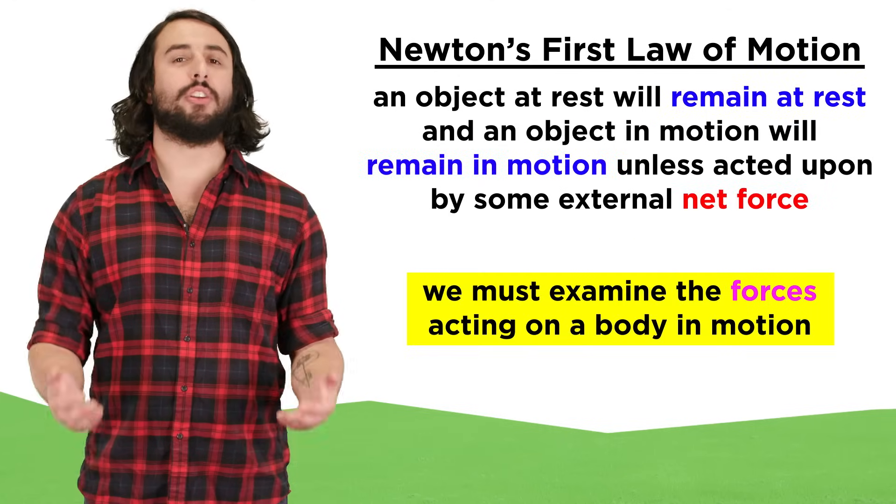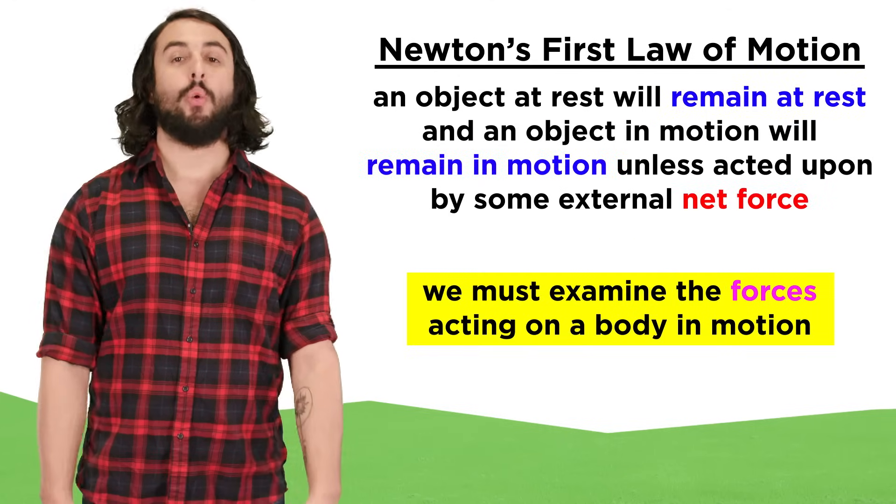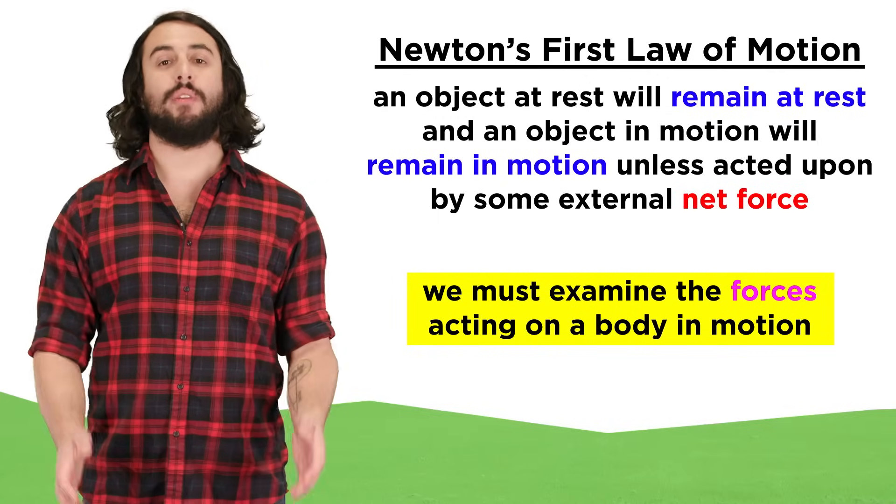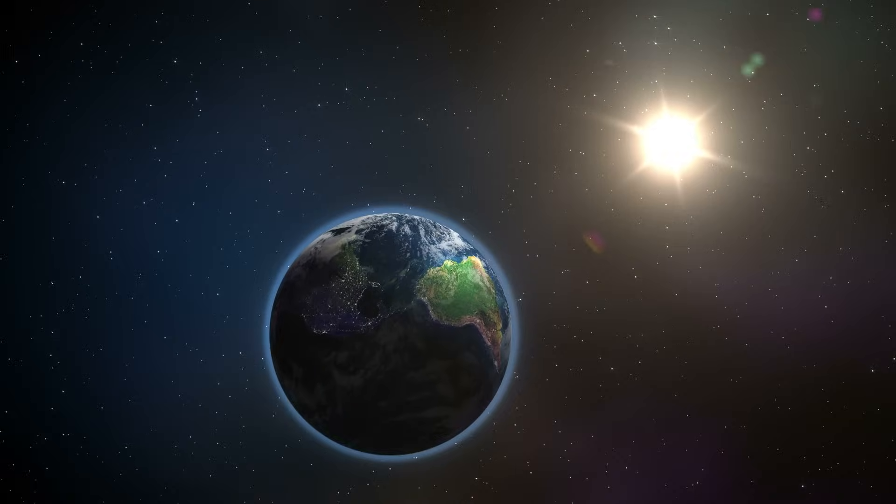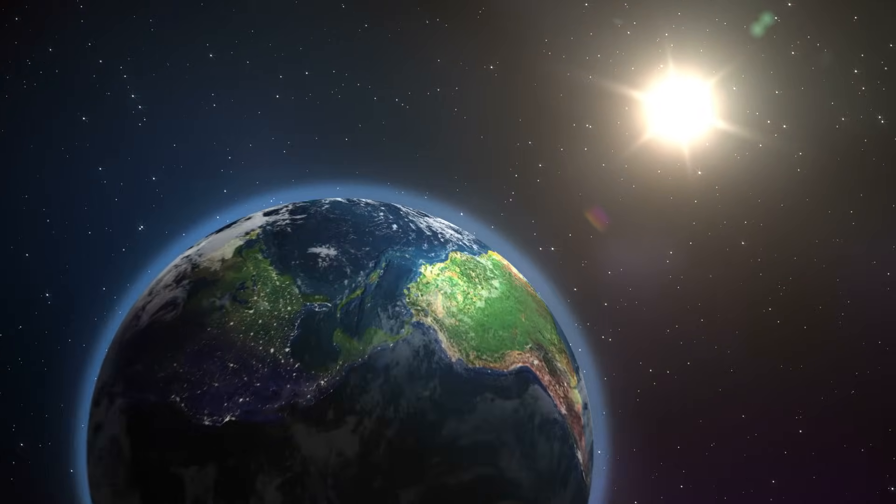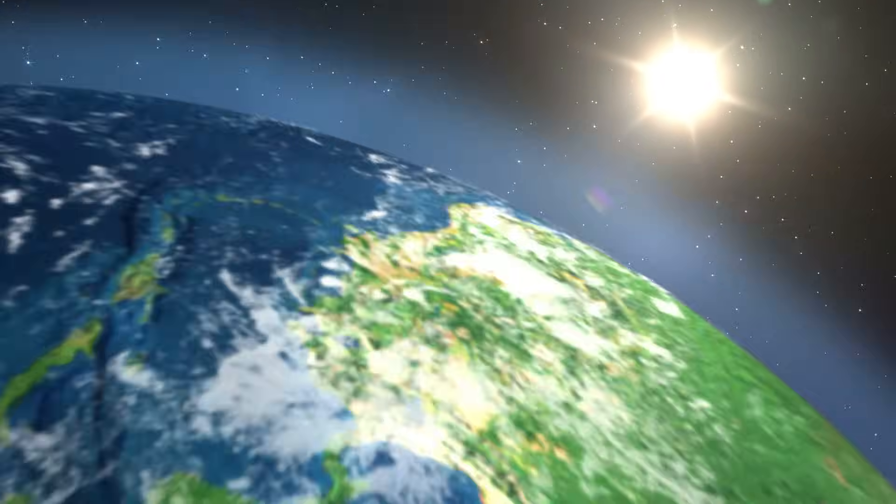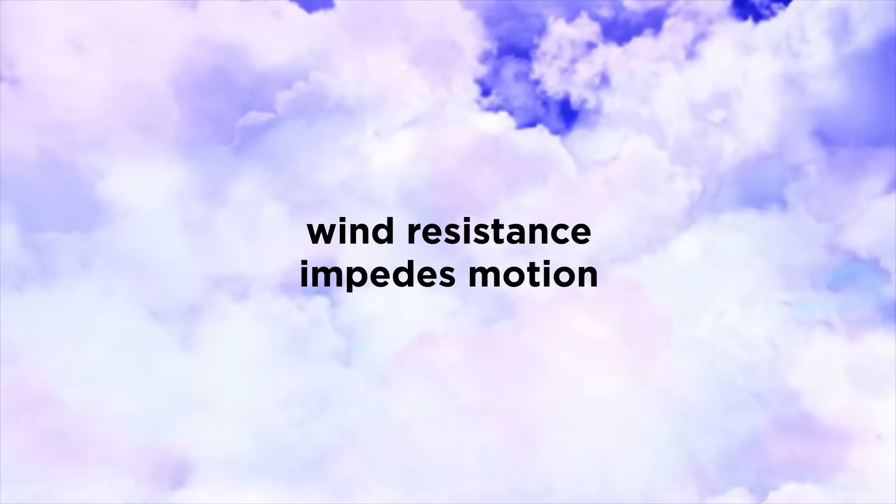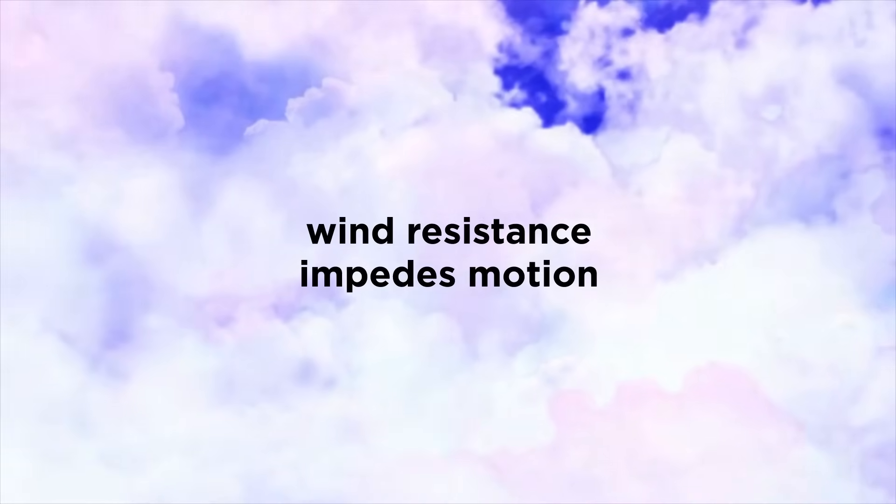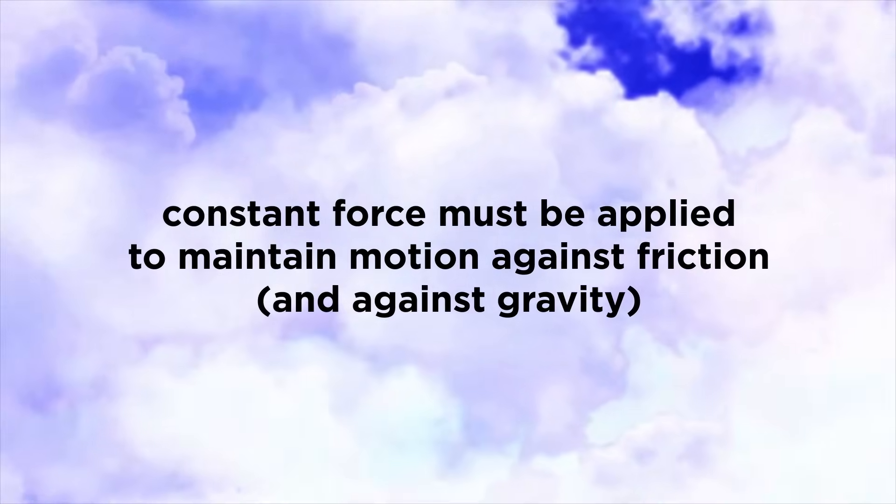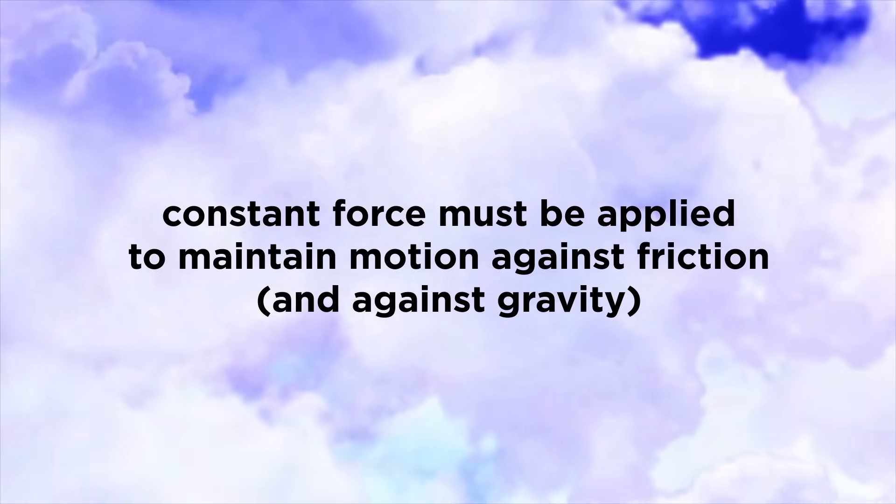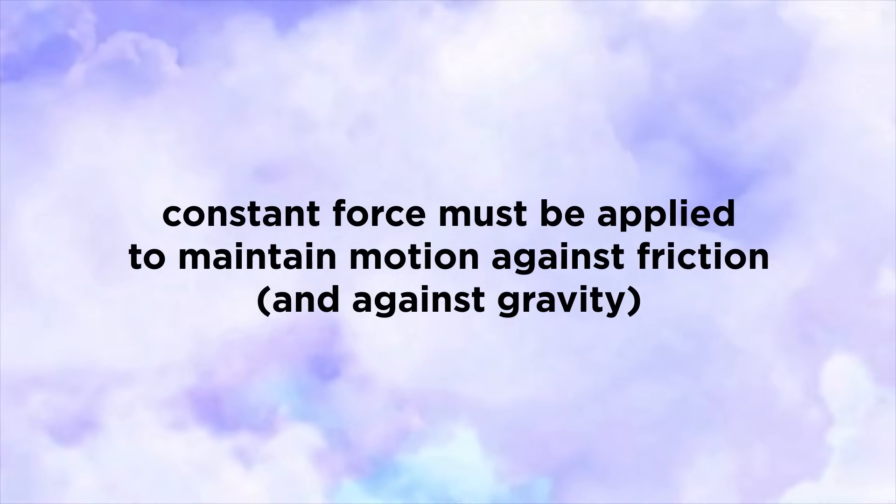To understand Newton's first law of motion, we have to understand all of the forces that act on a body in motion. Our planet is a complicated system, and when we move around in our atmosphere, we experience things like wind resistance and other forms of friction, which is a force that resists motion. This is what slows us down, requiring the application of constant force to keep moving.